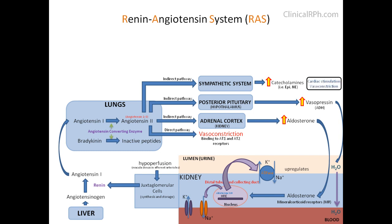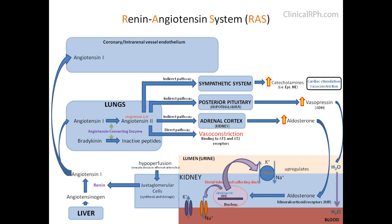This increases cardiac stimulation and vasoconstriction. Interestingly, research in the last decade found that angiotensin 1 goes back to the heart and kidneys, where it gets converted to angiotensin 1-9 by an enzyme called angiotensin-converting enzyme 2 (ACE2). There are no known effects of angiotensin 1-9, but it gets converted to angiotensin 1-7 by ACE found in the lungs, which leads to vasodilation.